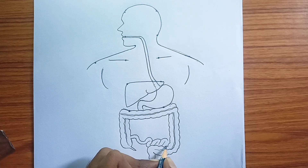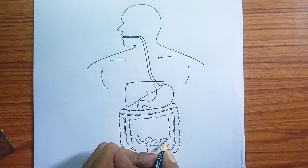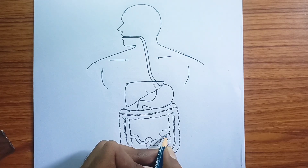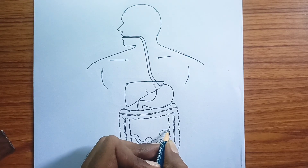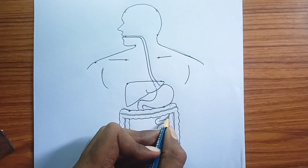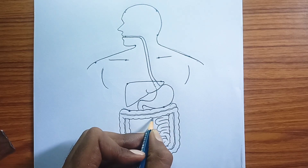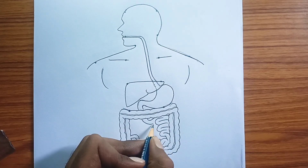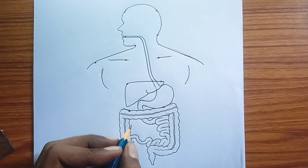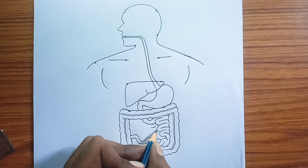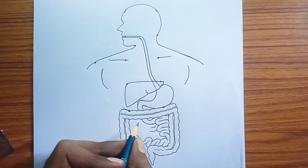Stomach. A J-shaped organ where food is mixed with gastric juices, containing acid and enzymes like pepsin, to continue chemical and mechanical digestion.